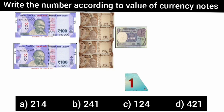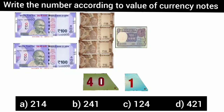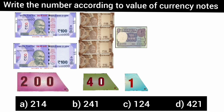Now children, in the picture, how many ten rupees notes are shown? Very good. There are four ten rupee notes, so it is four tens — that is forty. Now children, how many notes of hundred rupees are shown in the picture? Very good. There are two notes of hundred rupees, so it is two hundred.